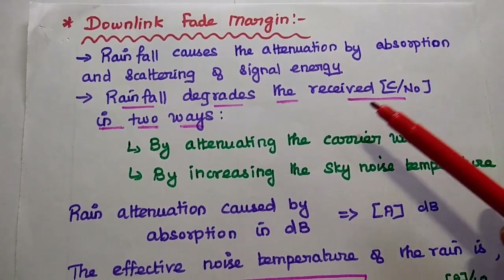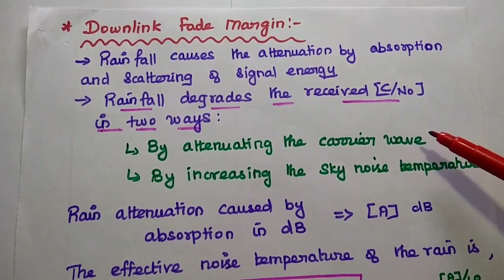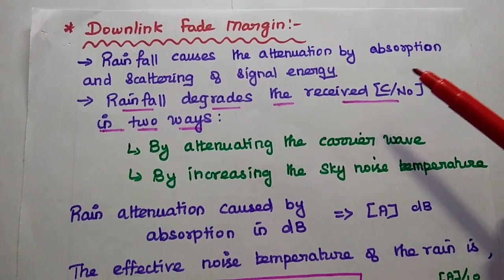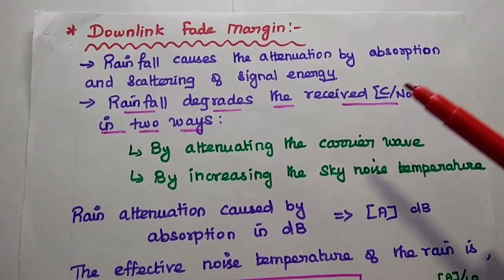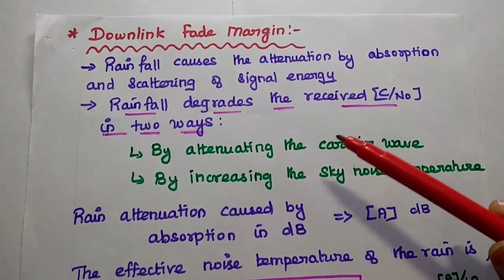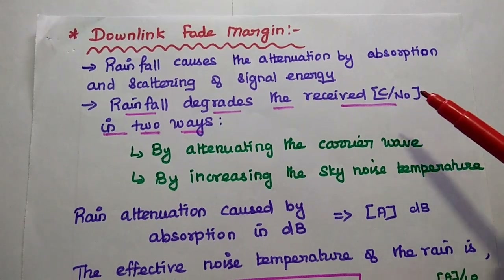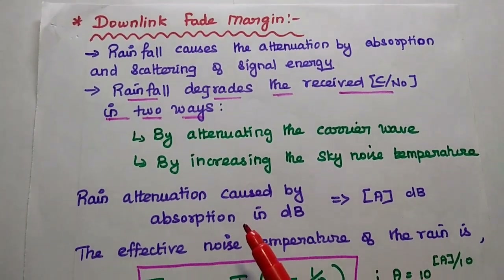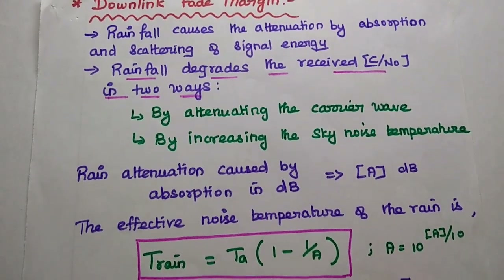For the downlink rain fade margin, from the satellite to the earth station, rainfall causes attenuation by absorption and scattering of the signal energy. Similarly in the downlink, rainfall degrades the received carrier-to-noise ratio in two ways: one is by attenuating the carrier wave, and the other is by increasing the sky noise temperature.